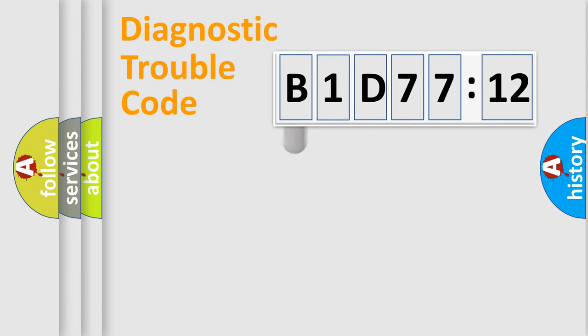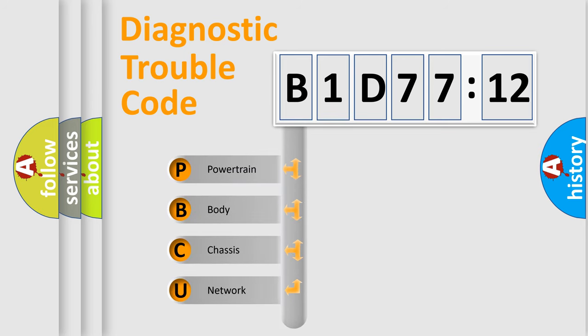First, let's look at the history of diagnostic fault code composition according to the OBD2 protocol, which is unified for all automakers since 2000. We divide the electric system of automobile into four basic units.